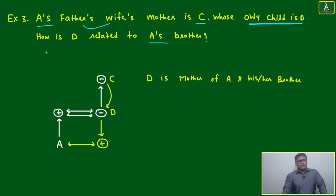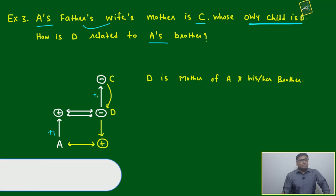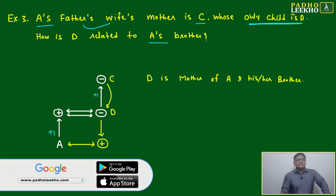First we will try to start from A's father, plus one. After then wife means somebody will be there. Wife here. Wife's mother means again plus one. Mother minus minus is C. This is C. Very clear.